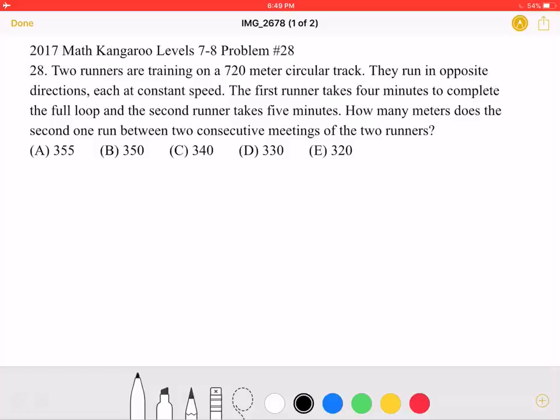How many meters does the second one run between two consecutive meetings of the two runners? A, 355, B, 350, C, 340, D, 330, or E, 320.